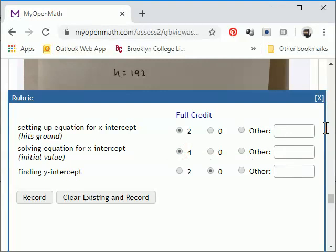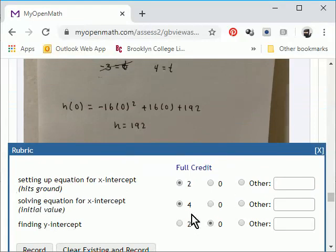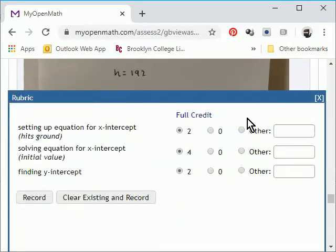And then this question also has them find the y-intercepts, so we can see if they did that. Looks like it. And again, if they made a computational error or used the wrong formula, they would have already been penalized for it.